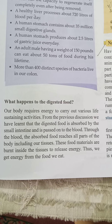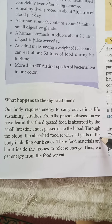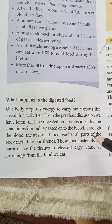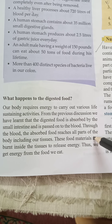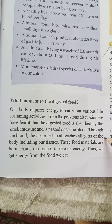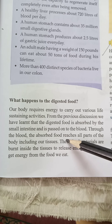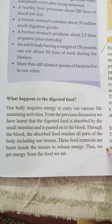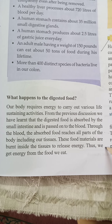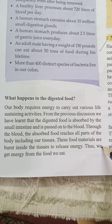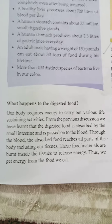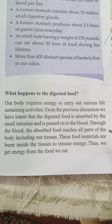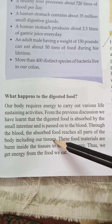Small intestine میں food digest ہو جاتا ہے، digest ہونے کے بعد وہاں absorb ہو جاتا ہے، اور small intestine سے وہ blood میں pass ہو جاتا ہے — یعنی energy اس کی blood میں شامل ہو جاتی ہے۔ Through the blood, the absorbed food reaches all parts of the body including our tissues۔ Blood میں جب food سے energy absorb ہوگی، وہ blood کے ذریعے body کے ہر حصے میں پہنچے گی، tissues میں بھی۔